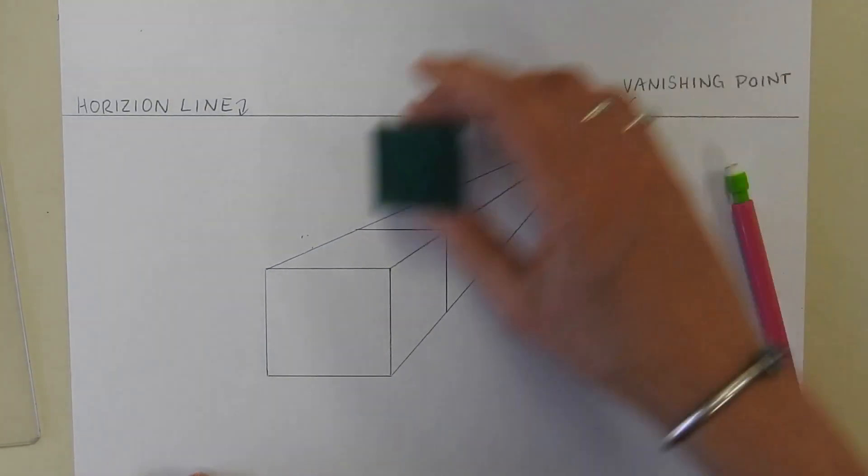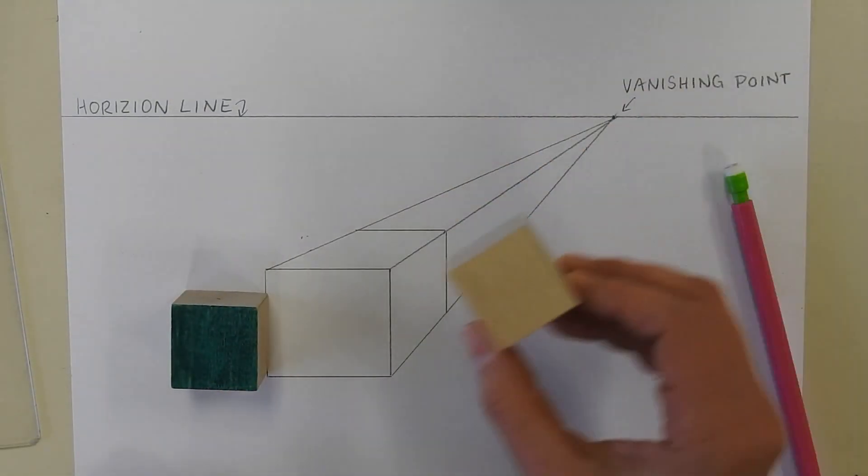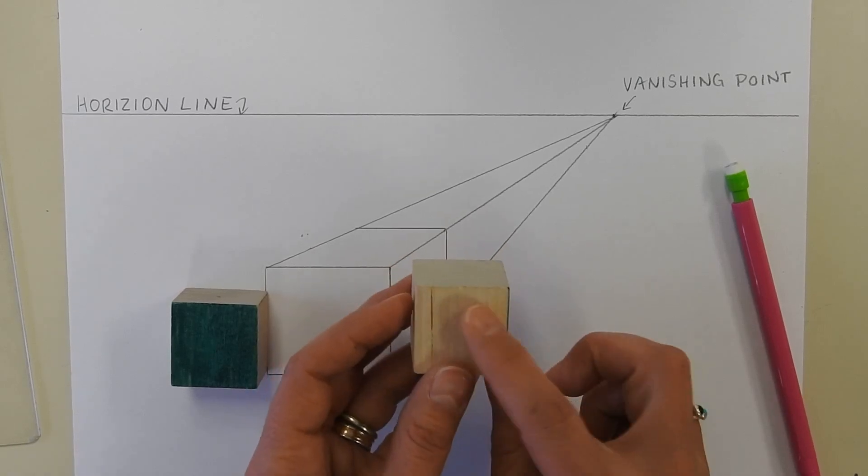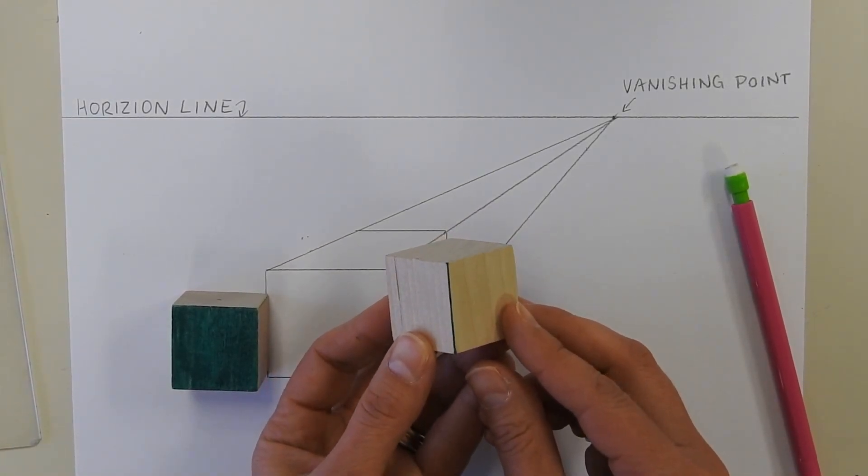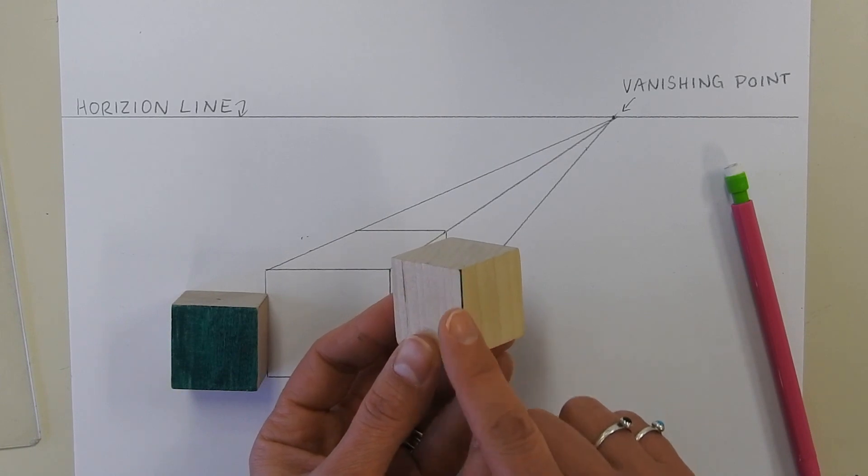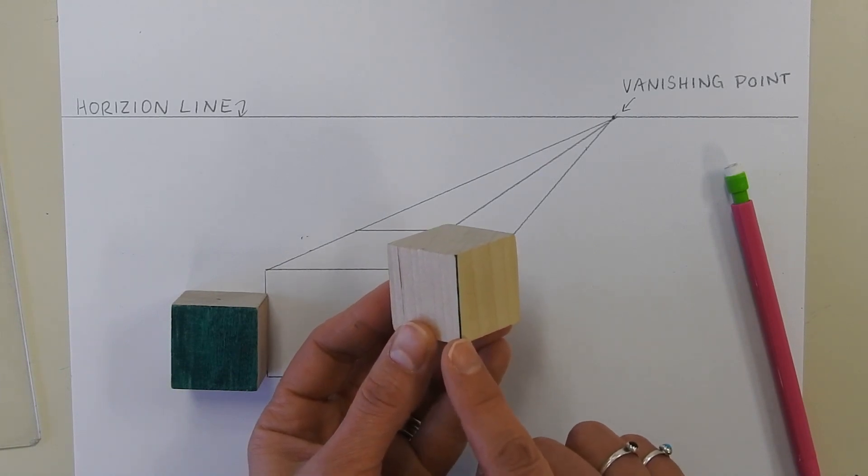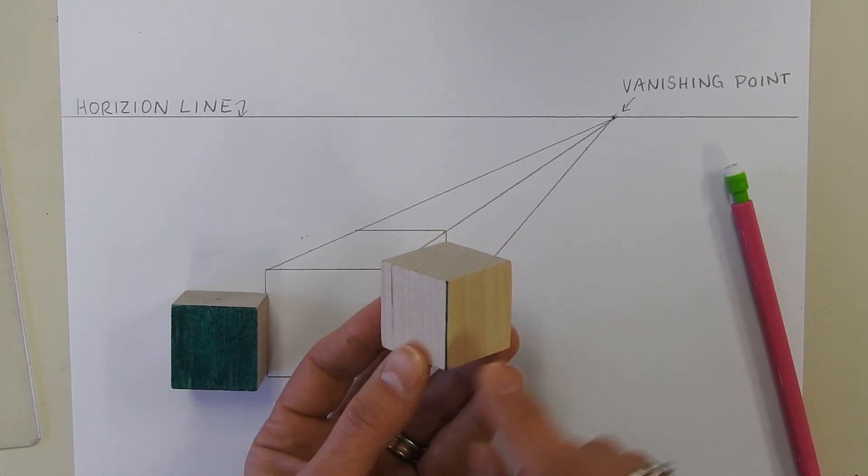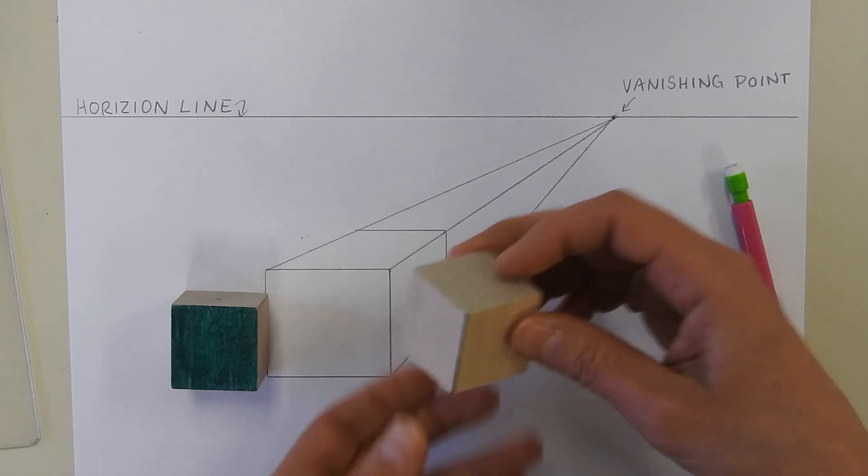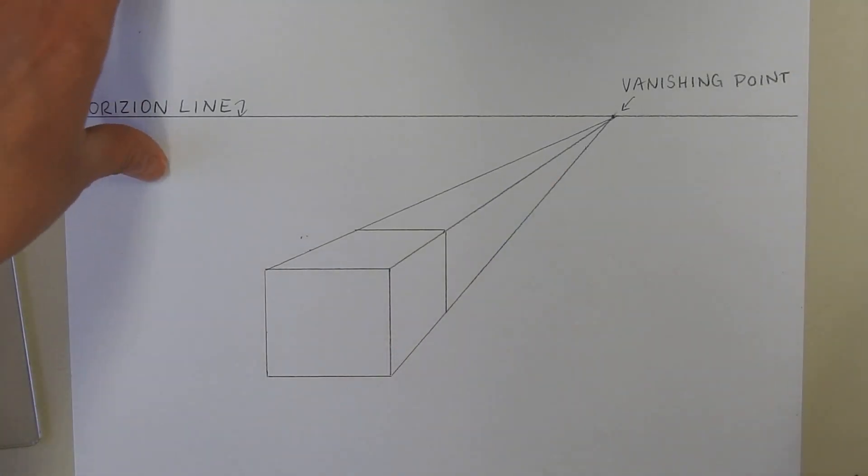But what happens if you're looking at your cube and you're not looking at that front face? You're looking at that corner right here, the leading edge. If you have that viewpoint, you're going to use two point perspective in your drawing to show the depth. So that's what I'm going to show you how to do. So we'll get a new piece of paper.